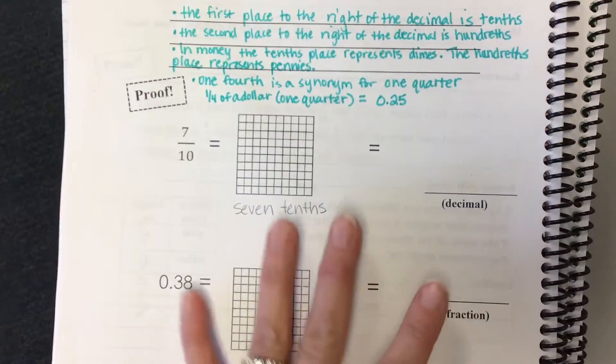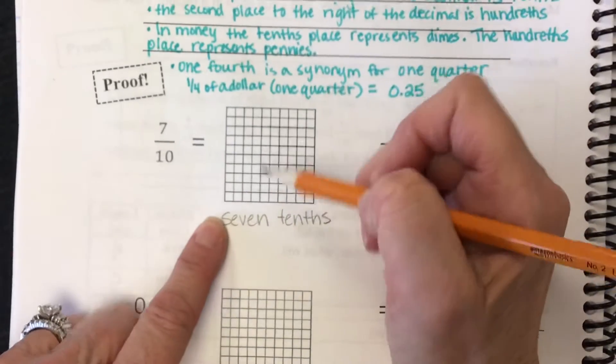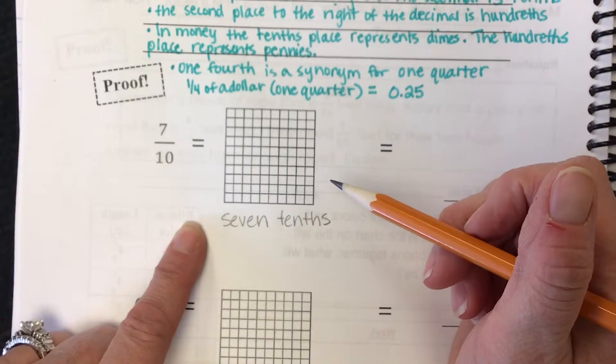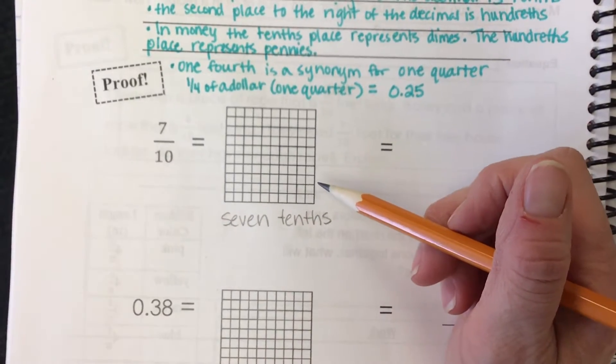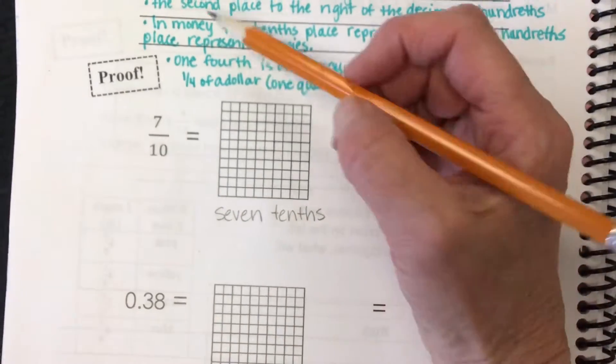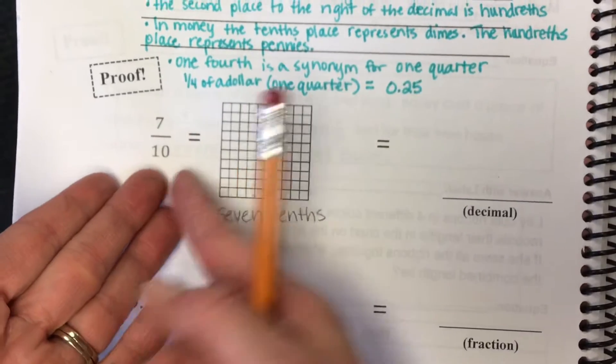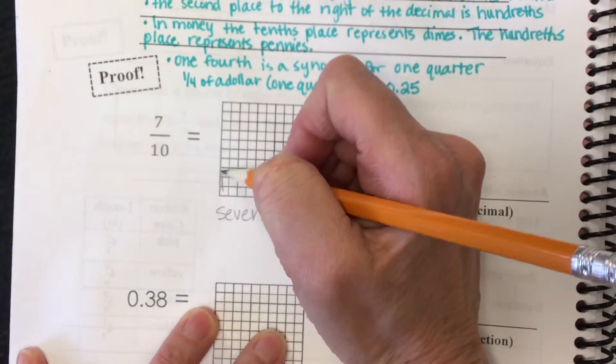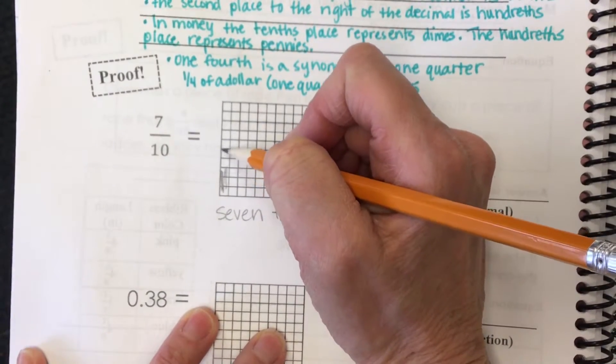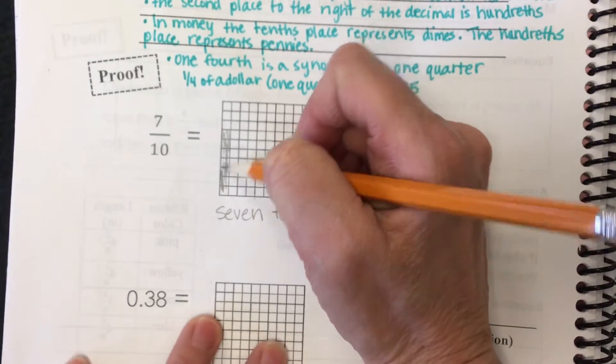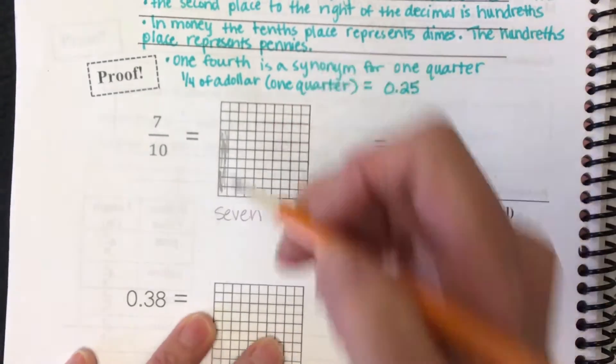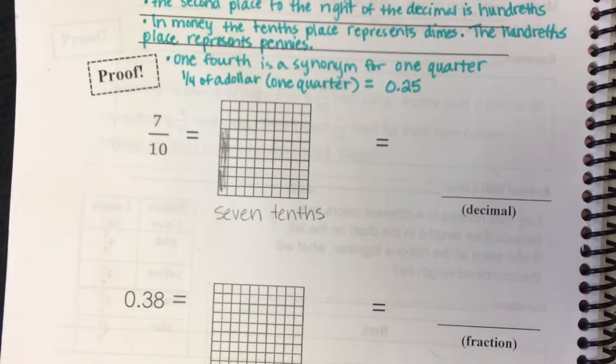So you should have written seven tenths. And then some of us got confused because the grid here is how many equal parts? How many? 100. And you're supposed to shade in seven tenths. And some of you shaded in this, which is not seven tenths. That is seven hundredths.